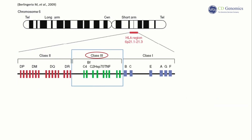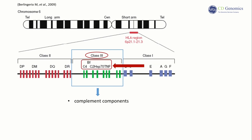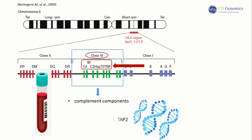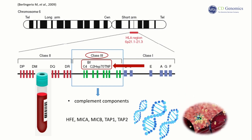HLA Class III antigens are complement components including C2, C4, BF, and other complement genes, and are found in the serum. Besides these three types, there are other genes such as HFE, MICA, MICB, TAP1, and TAP2. Given the high polymorphism of HLA gene loci and numerous studies advancing understanding of the relationship between HLA types and diseases, HLA typing is indispensable in immunological analysis.